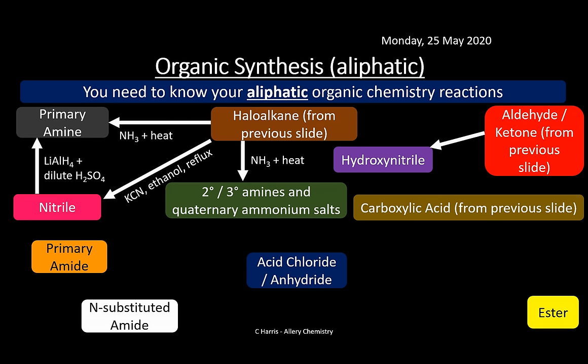Aldehyde or ketone to hydroxynitrile: potassium cyanide, sulfuric acid, 20°C (room temperature). Acid chloride or anhydride to carboxylic acid: water at 20°C. Carboxylic acid to ester: concentrated sulfuric acid (catalyst), alcohol, and heat.